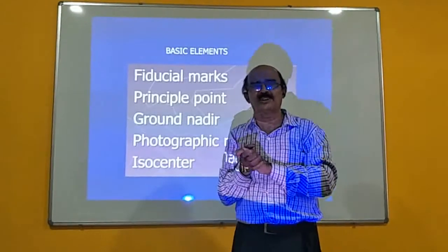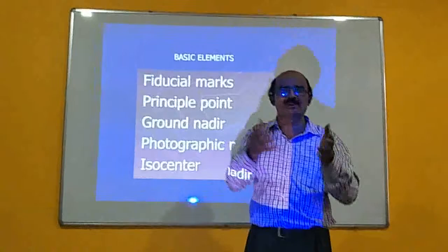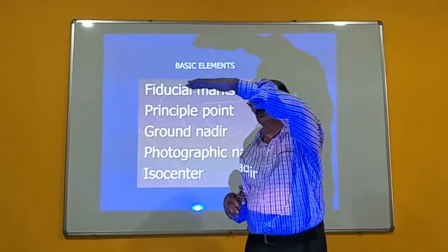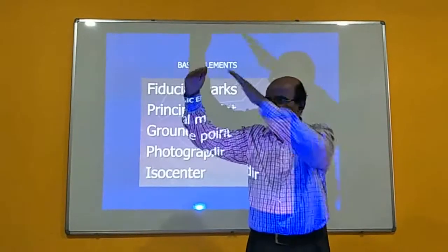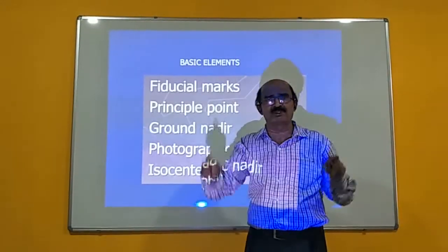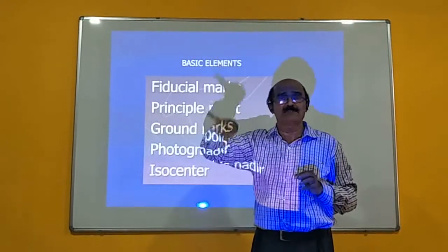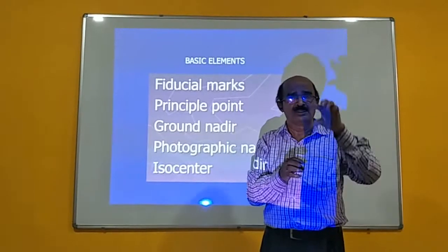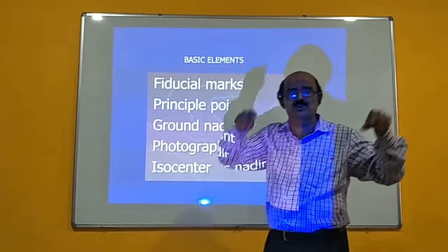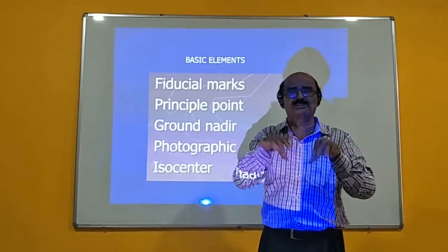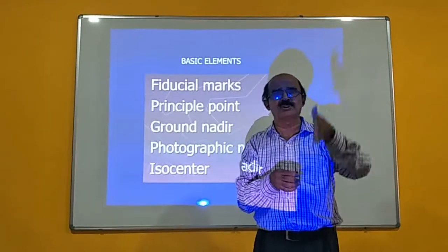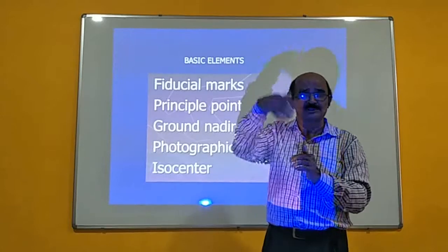Suppose you have two successive overlapped aerial photographs, normally called stereo pairs. When the aircraft is at one position it photographs area AB; at another position the same area is covered from a different angle, giving area CD. The area CB is common in both photographs. When you keep a stereo pair under the mirror stereoscope and fuse it properly, you get a three-dimensional view of the terrain, enabling quantitative measurements.